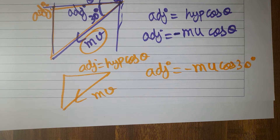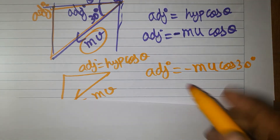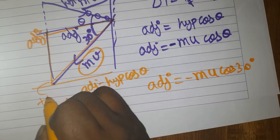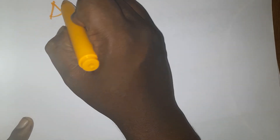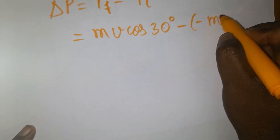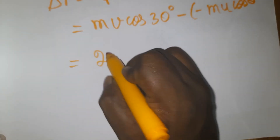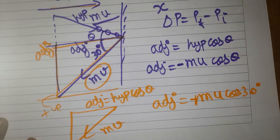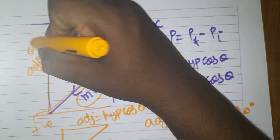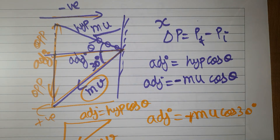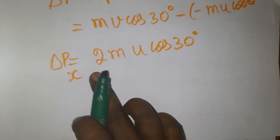Very simple logic. Now, change in momentum = momentum final minus momentum initial = M×V×cos30 − (−M×U×cos30). Since U and V are the same, minus minus becomes plus, giving 2MU×cos30. This is the change in momentum along the x-axis. For the y-axis, the opposite sides of the two triangles cancel each other out, so there is no change in momentum along the y-axis.